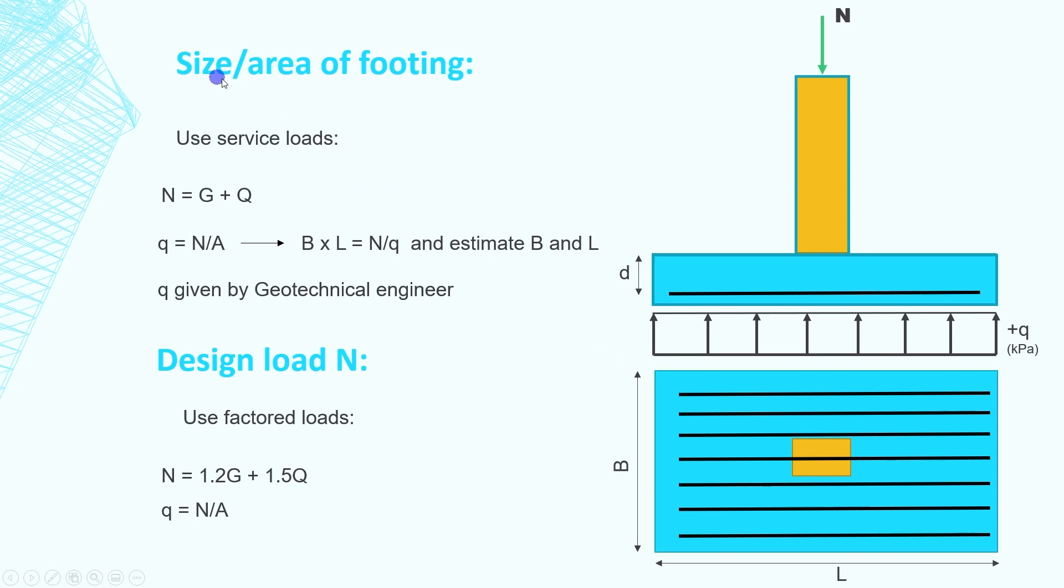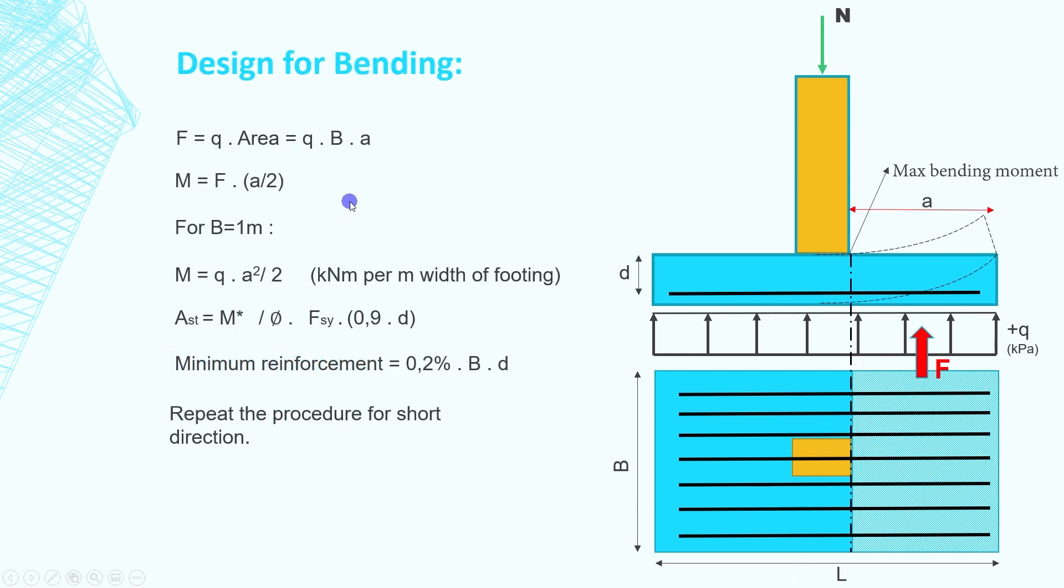To determine the plan dimensions of the footing in contact with the soil we use the allowable soil bearing pressure Q given by the geotech and the service loads, which is the unfactored combination G plus Q. Then we use the ultimate limit state combination to get a factored design bearing pressure and we're going to use this factored pressure to design the footing for bending and shear.